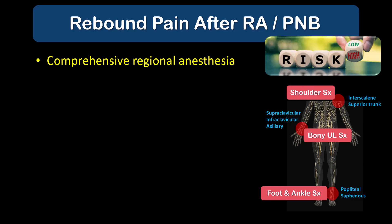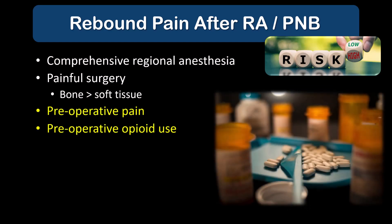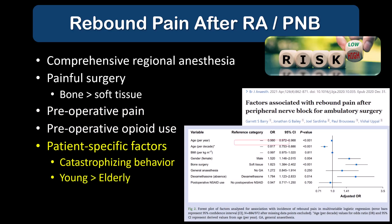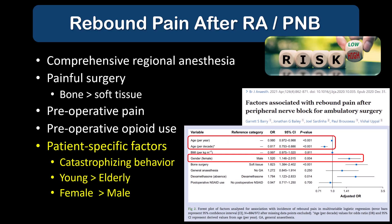Several risk factors have been identified for severe pain on resolution of regional anesthesia, and most are intuitive. Rebound pain occurs following techniques that provide complete or near-complete analgesia. The severity of postoperative pain is another factor — bony surgery carries a higher risk compared to soft tissue surgery because it's generally associated with worse pain. The presence of severe preoperative pain and opioid use is also a risk factor, as are patient characteristics such as a tendency for catastrophizing, female gender, and younger age. The takeaway is that we should anticipate rebound pain in any patient in whom we perform a single injection peripheral nerve block providing surgical or near-complete analgesia, and if one or more additional risk factors are present, we should consider implementing as many preventative strategies as possible.